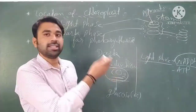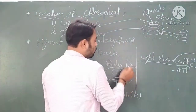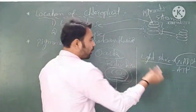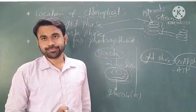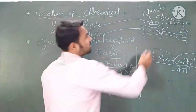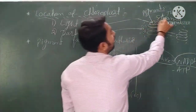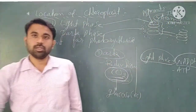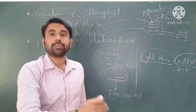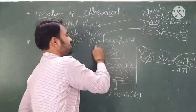The molecules used in the dark phase — NADPH2 and ATP — are produced in the light phase. So the light phase occurs in the thylakoid, and the dark phase occurs in the stroma of the chloroplast. These are the locations and processes of photosynthesis: two processes, the light phase and the dark phase.